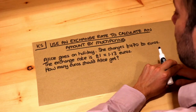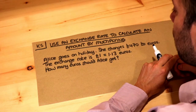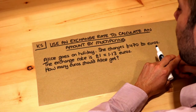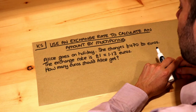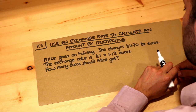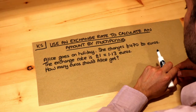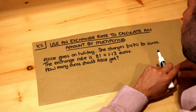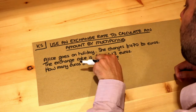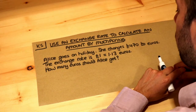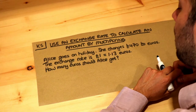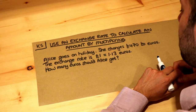Hello and welcome to Dr Ross Mass's key skill video on using an exchange rate to calculate an amount by multiplying. Alice goes on holiday and she changes 470 pounds to euros. The exchange rate is one pound is worth 1.13 euros. How many euros should Alice get?